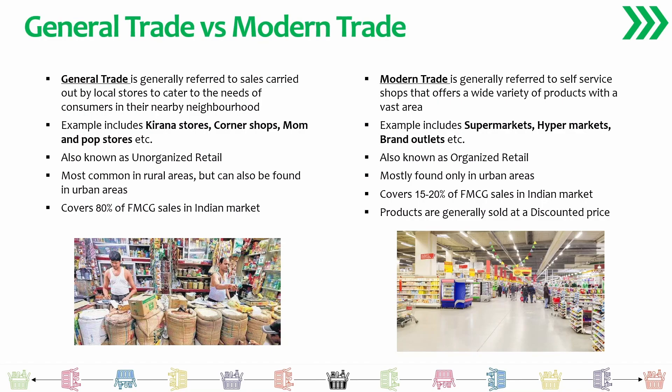General trade refers to all the sales carried out by local stores to cater to the needs of end consumers in the nearby neighborhood — things like small kirana stores, corner shops, mom and pop stores, tea shops, or platform shops. In the Indian economy, these retail outlets are categorized as unorganized retail, since they are not duly registered with a DIN number and may not track revenue or pay income taxes. This is very common in rural places, urban areas, and neighborhoods alike.